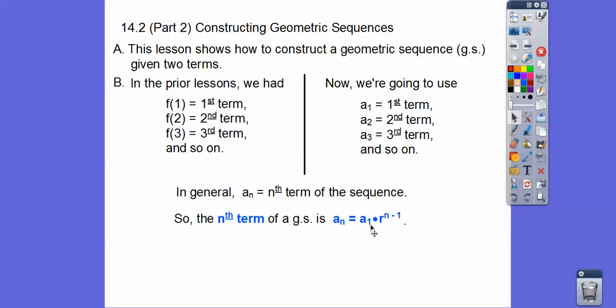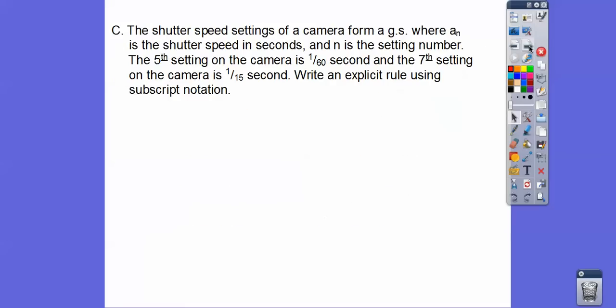It equals our first term, that's what a sub 1 is, times r, and then r is raised to the n minus 1 power. And remember, we have to do the power first before we multiply by this number right here. So we'll have a few examples here.